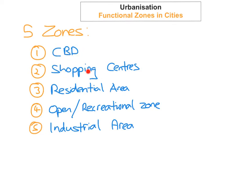The second function is the Shopping Centre Areas. This is where you have larger shopping centres such as Blanchardstown, Dundrum, or Liffey Valley. They're usually on the suburbs of the city, and they're very accessible, usually with roads and railway lines. They're very popular because traffic is not as heavy around these areas as it would be in the Central Business District right in the heart of the city. Many people like going to these shopping centres — they're usually bigger because they have a lot of land space, as land is cheaper in the suburbs than in the city centre.